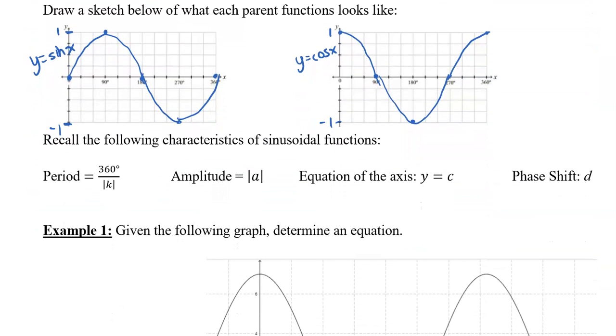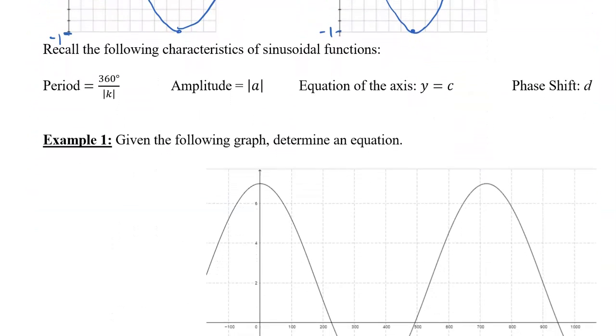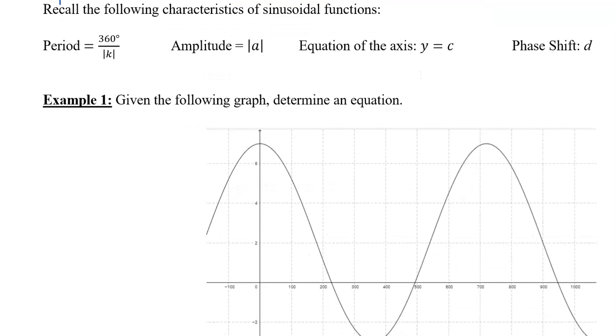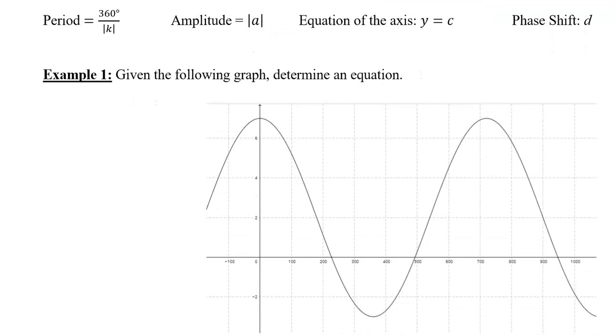So we're going to look at two examples here as we consider the following characteristics. We have the period being 360 over the absolute value of k, in other words, it's 360 degrees times the 1 over k factor. The amplitude is the absolute value of A. The equation of the axis is y equals the c value. And the phase shift, how much it's been shifted either right or left, is that d value.